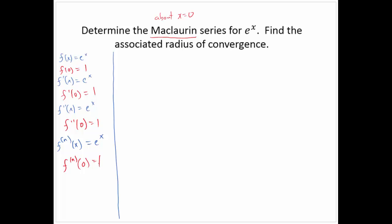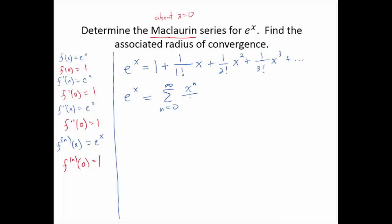Applying the Maclaurin series formula, eˣ = 1 + (1/1!)x + (1/2!)x² + (1/3!)x³ + ⋯. So eˣ can be represented as Σ(n=0 to ∞) xⁿ/n!. That's the Maclaurin series representation for eˣ.